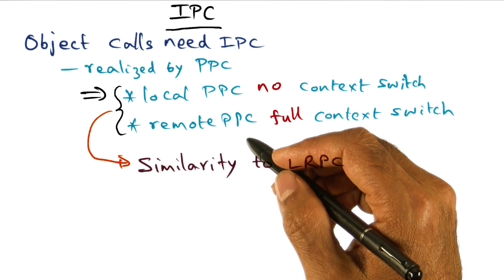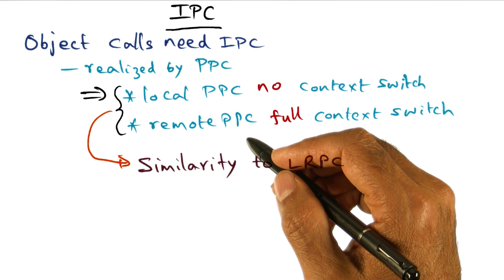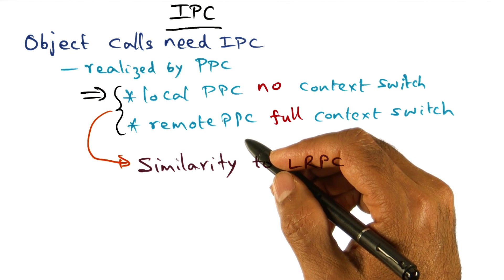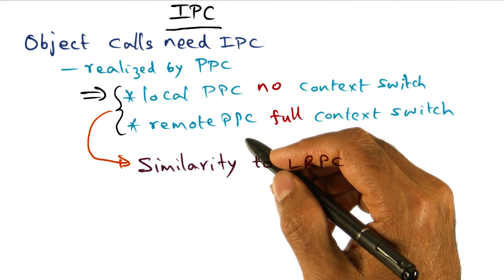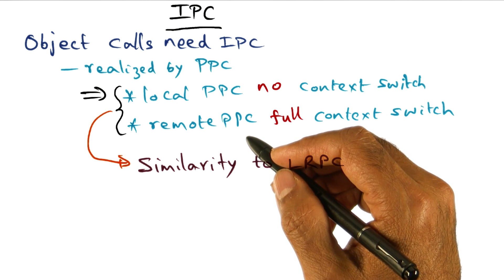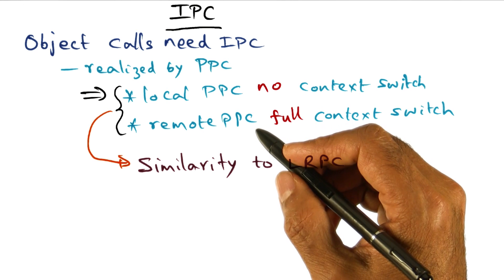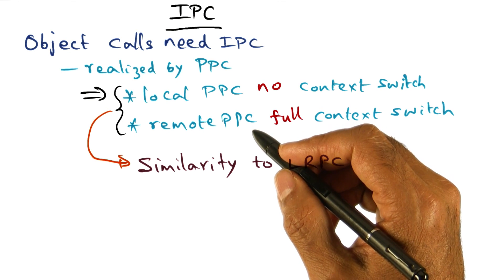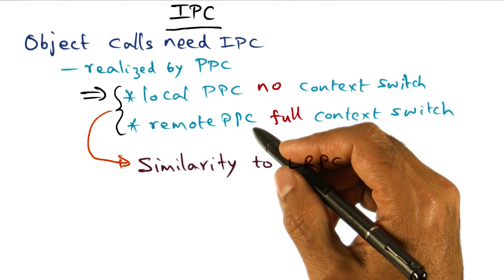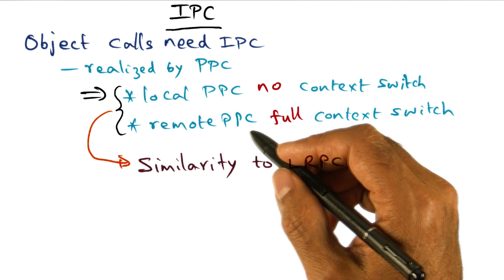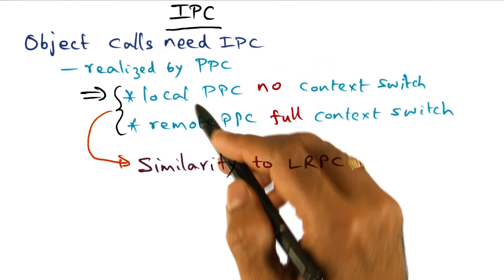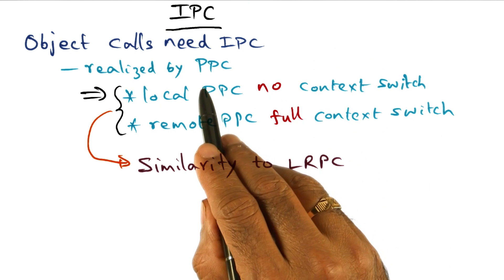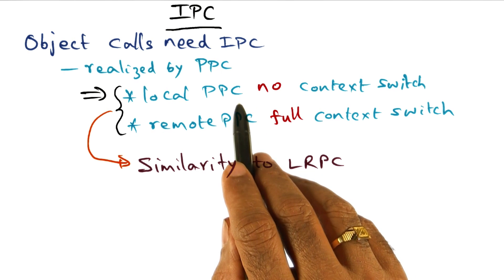For instance, the FCM object may need to contact the DRAM object in order to get a page frame. In that case, the FCM object is the client and the DRAM object is the server serving the request. That request is satisfied through IPC realized by a protected procedure call mechanism.